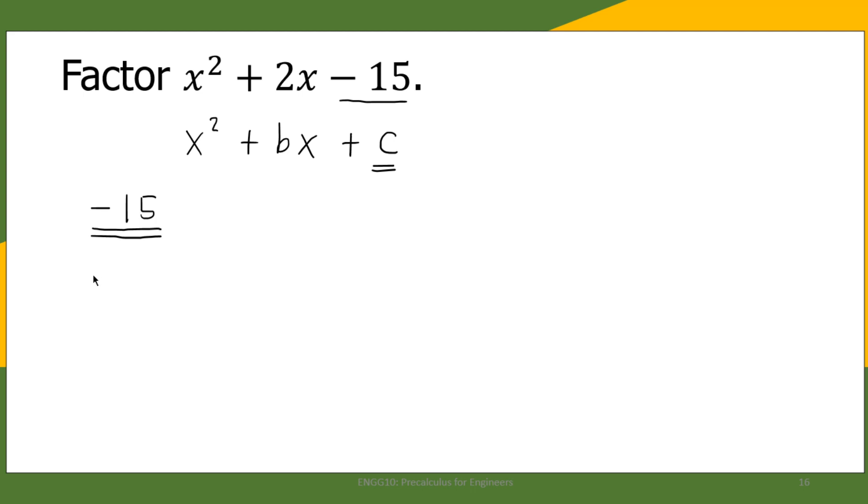We take a look at negative 15. What are the factors of negative 15? We can say negative 15 may be equal to -1 × 15, or the other way around, 1 × -15. We also have -3 × 5 or 3 × -5. What other factors of 15? I think there's no more.